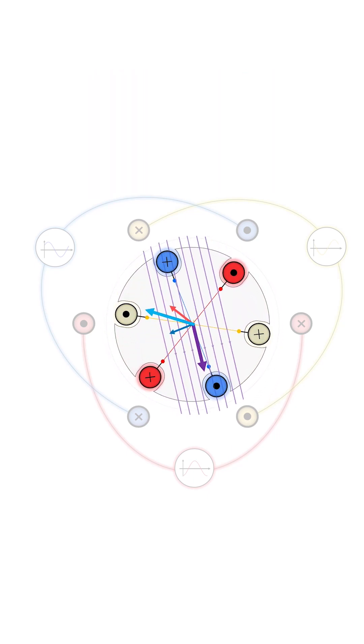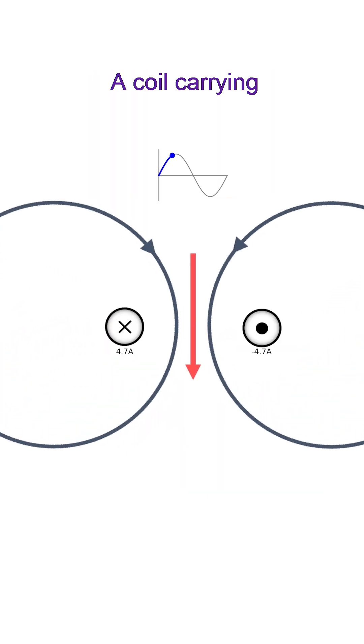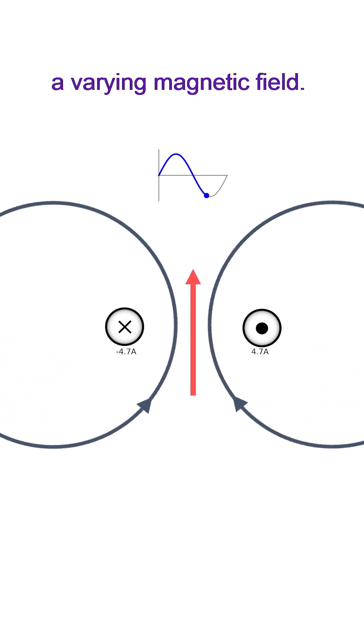How does an induction motor work? A coil carrying a sinusoidal current generates a varying magnetic field.